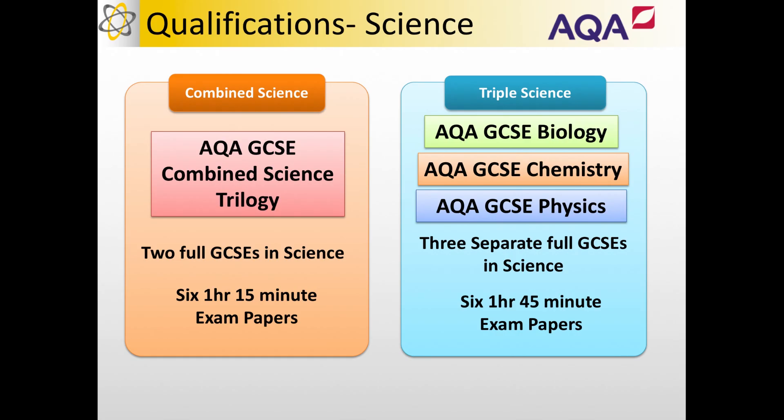The alternative is that you could be doing Triple Science and that would involve you taking a separate GCSE in Biology, Chemistry and Physics. So it gives you three full GCSEs instead of two. To do that you're going to take six 1 hour 45 minute exam papers. The exam papers are each half an hour longer.